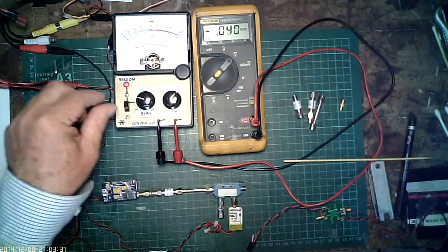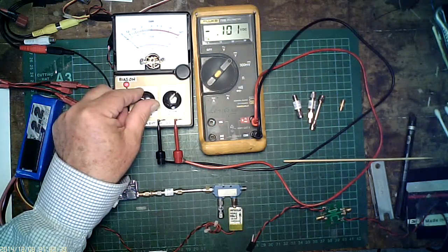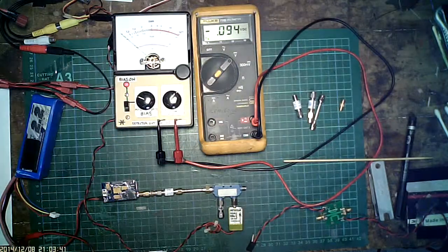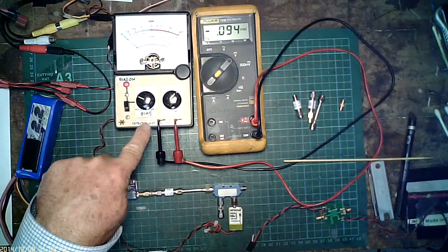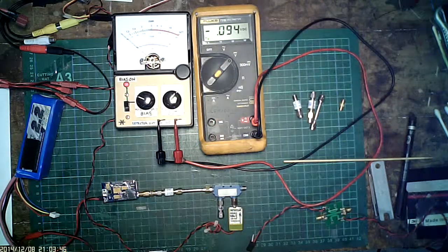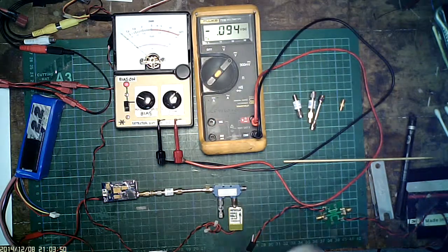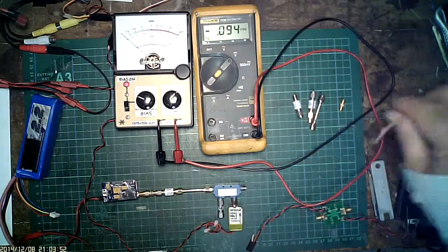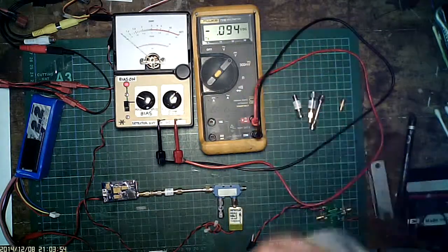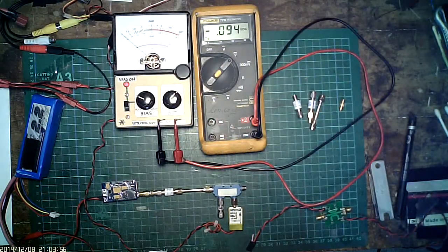Turn the bias on, adjust the knob. Three microamps of bias. Also, these two terminals are the output of the diode detector direct onto a multimeter. So we've got 95 millivolts, 0.095 volts of forward bias on the diode.